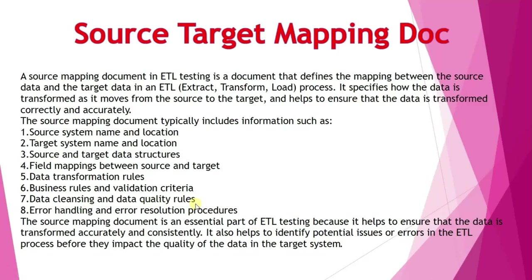Data quality involves maintaining consistency — for example, correct use of capital letters, small letters, punctuation, and so on. That is the seventh point. The eighth point is error handling and error resolution procedures. The source target mapping document is an essential part of ETL testing because it helps ensure that the data is transformed accurately and consistently, so the data must be transformed from source to target without errors.